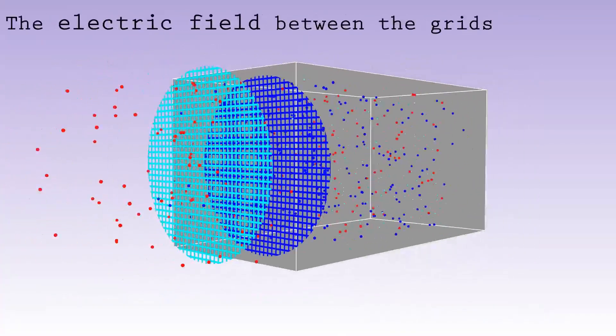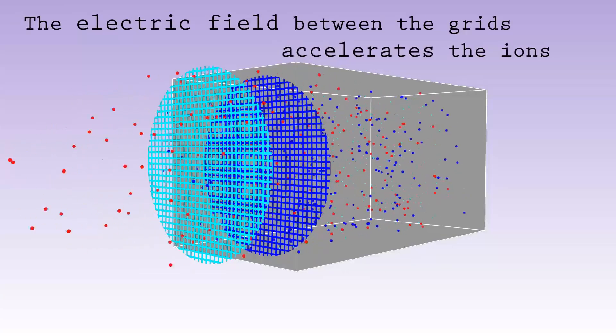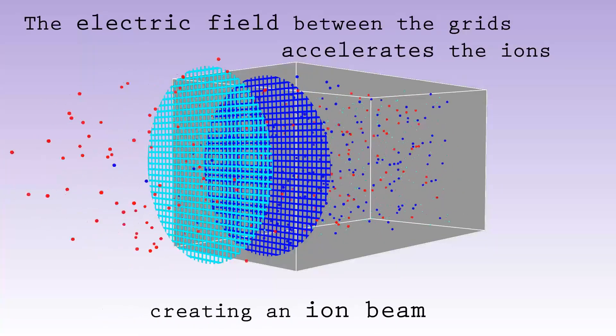Ions that are in this electric field will be accelerated to an extremely high speed, creating an ion beam.